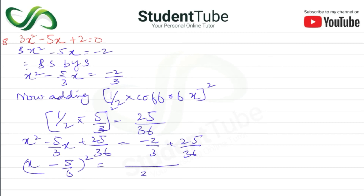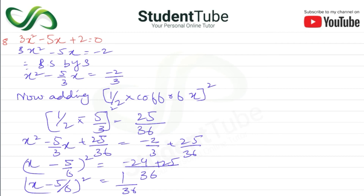Taking LCM of 36 on the right side: minus 24 plus 25 over 36, which equals 1 upon 36. So the equation is: x minus 5 upon 6, whole square, equals 1 upon 36. Now we extract the square root from both sides.